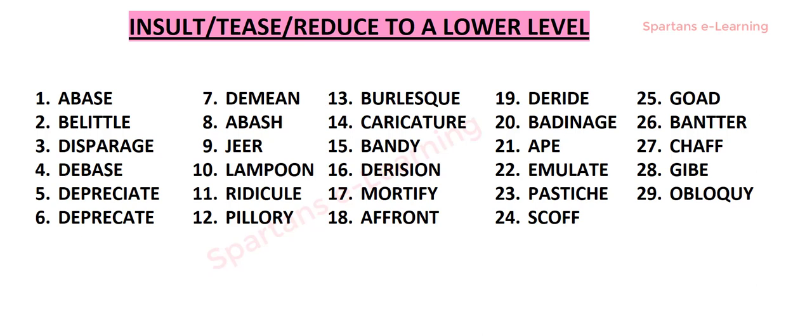Hi friends, this is the first video from 'Learn Vocabulary Through Grouping Technique' for GRE, GMAT, and SAT. In this video, we are going to discuss all the words related to insult, tease, or reduce to a lower level. All the words falling under this category will be discussed in a single go. There are 29 such words falling under this category, so you can learn all these 29 words as a group.